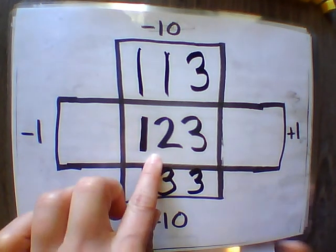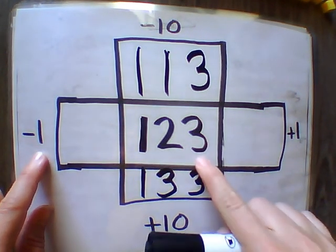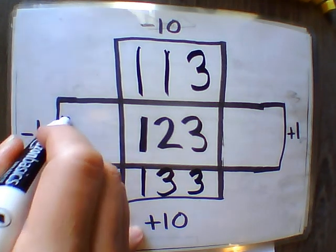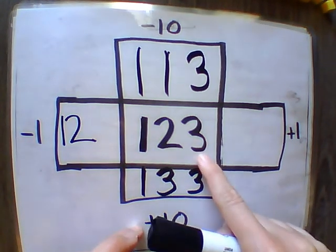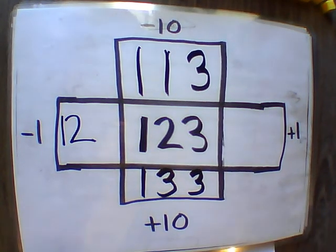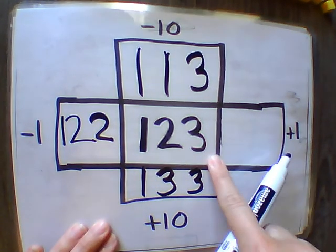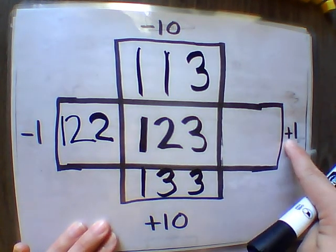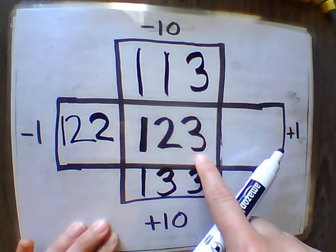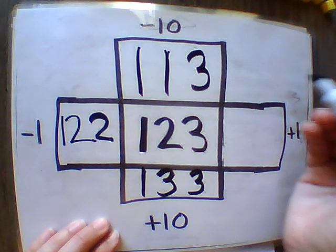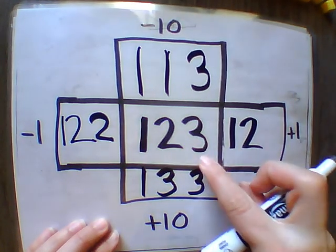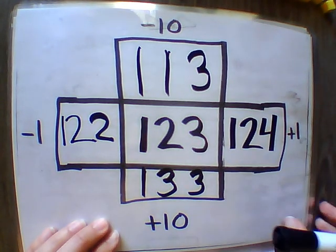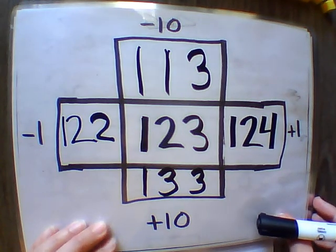Now we're doing one hundred twenty-three minus one. We're focusing on the one spot, so the hundreds and tens stay the same. Three minus one is two. One hundred twenty-three minus one equals one hundred twenty-two. Now for plus one — we're only focusing on the one spot, so hundreds and tens stay the same. Three plus one more is four. One hundred twenty-three plus one equals one hundred twenty-four.